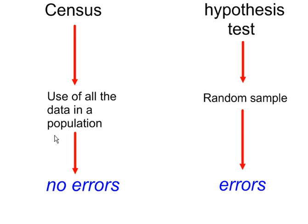Because in a census we're using all of the data in the population, the result achieved will contain no errors. However, a random sample by its very nature may not be representative of the population, so this could lead to errors.